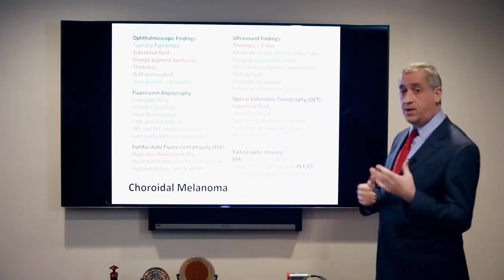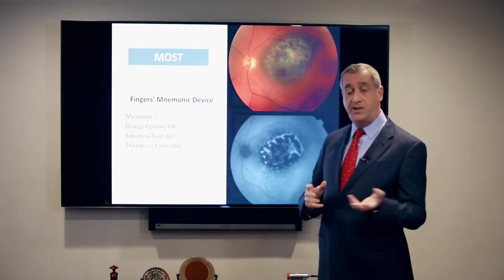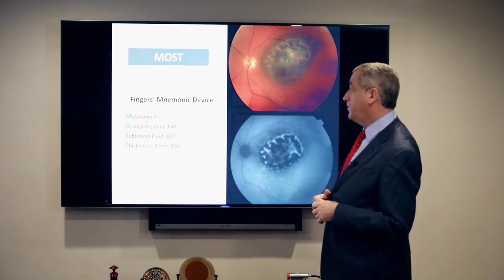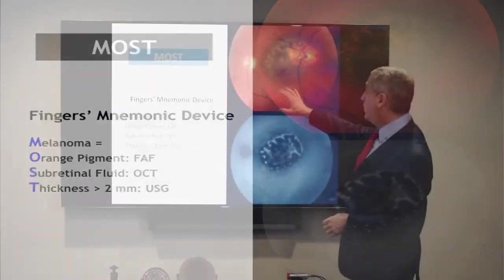OCT is really helpful for looking at subretinal fluid. I put together a mnemonic device — MOST — to help remember and differentiate suspicious nevi from melanomas. If you see orange pigment best seen on fundus autofluorescent imaging, subretinal fluid best seen on OCT, and thickness of 2 or more millimeters best measured with ultrasound, you have a melanoma. Here is a small melanoma with all those findings.